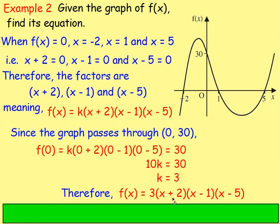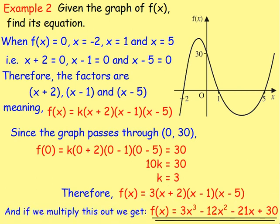You could take this a stage further and multiply the brackets. Probably multiply these two brackets out first, then multiply by x plus 2, and then multiply every term by 3. If you do that, you'd end up with 3x cubed minus 12x squared minus 21x plus 30. And that is the equation.